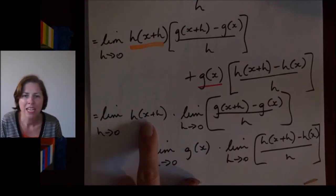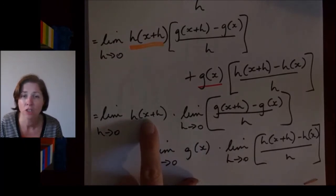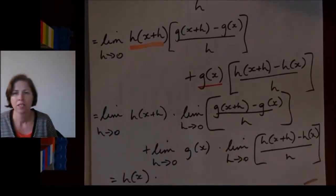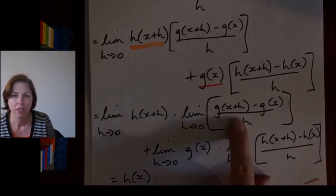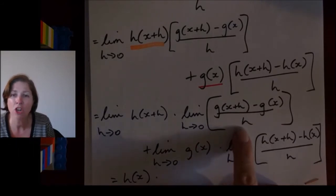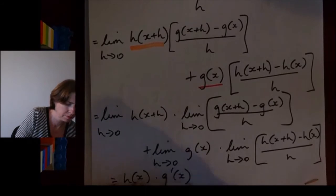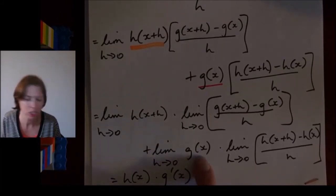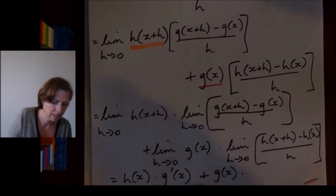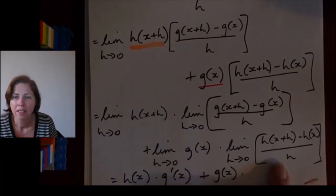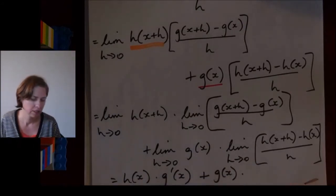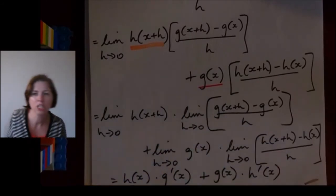Now the great thing is: the limit as h approaches zero of h(x+h) is just h(x), since h(x+h) approaches h(x) as h approaches zero. The limit as h approaches zero of [g(x+h) minus g(x)] over h is the definition of g'(x). The limit of g(x) has no h in it so it's just g(x), and the limit as h approaches zero of [h(x+h) minus h(x)] over h is the definition of h'(x).